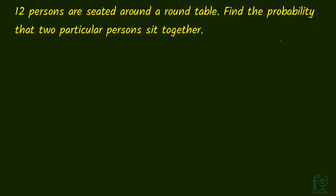Hi friends, welcome to today's video. Today's question is: 12 persons are seated around a round table. Find the probability that two particular persons sit together. There are 12 persons seated around a table, and we have to find the probability that two particular persons are sitting together.